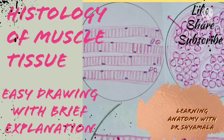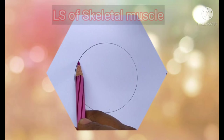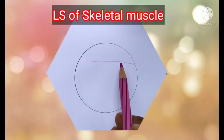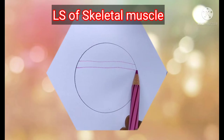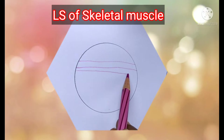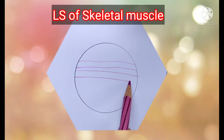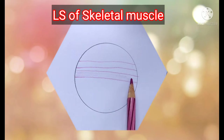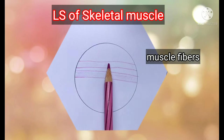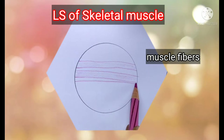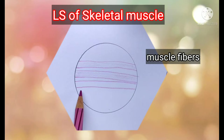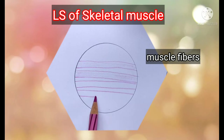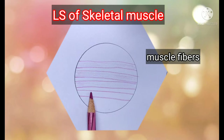Welcome back to the channel. Today we are going to discuss muscle tissue — first, the longitudinal section of skeletal muscle. The muscle consists of numerous muscle fibers. A muscle fiber is a multinucleated syncytium of cells, formed by fusion of small individual muscle cells called myoblasts.